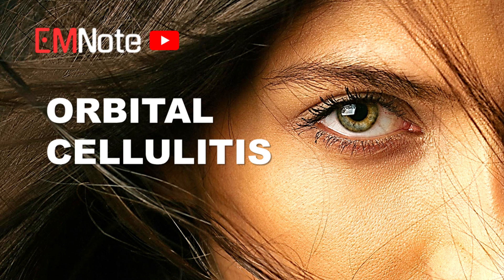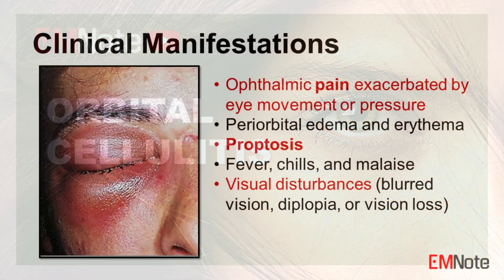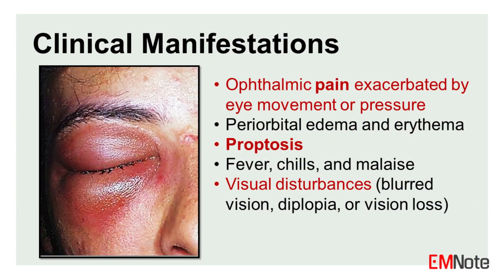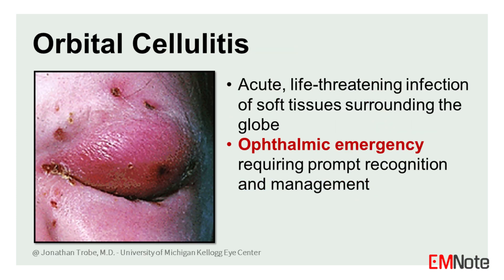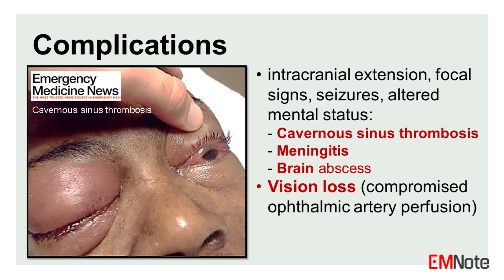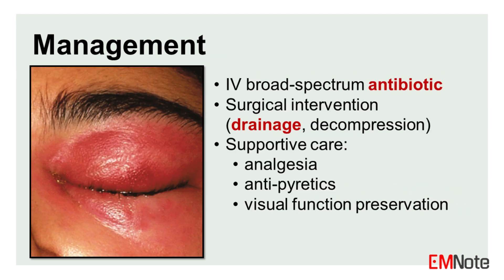In contrast, orbital cellulitis is an infection within the eye socket itself, posterior to the orbital septum. It often arises from the spread of a sinus infection, especially ethmoid sinusitis. Orbital cellulitis presents with sudden swelling of the eyelids and conjunctiva, eye movement pain, vision impairment, double vision, and fever. Left untreated, it can lead to severe complications like vision loss from increased intraocular pressure, permanent eye muscle dysfunction, cavernous sinus thrombosis, meningitis, and brain abscess. Prompt antibiotic therapy is essential and surgical drainage may be required for abscesses or other complications.